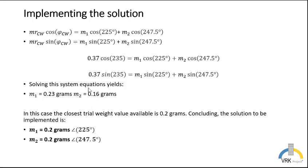However, there is neither 0.23 grams or 0.16 grams available to place in the rotor. The closest one is 0.2 grams. So we can propose a solution that m1 is 0.2 and m2 is 0.2 grams at 225 degrees and m2 0.2 grams at 247.5 degrees. Let's try this to see if that attenuates our initial unbalance. This will be our round number two.